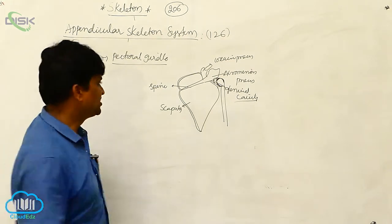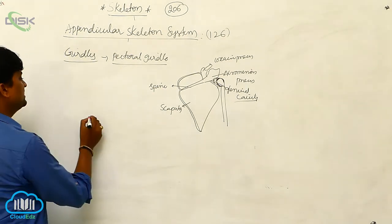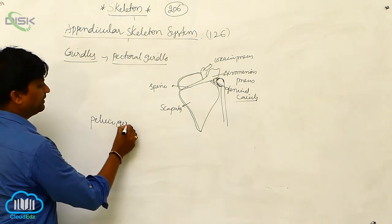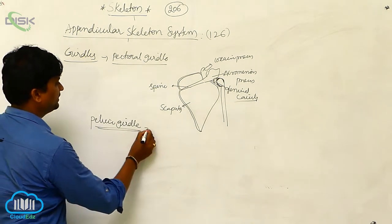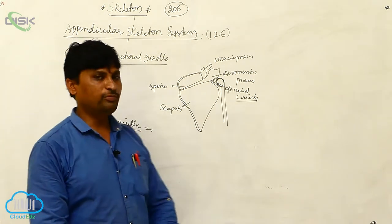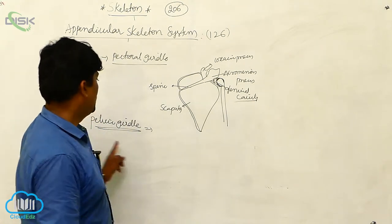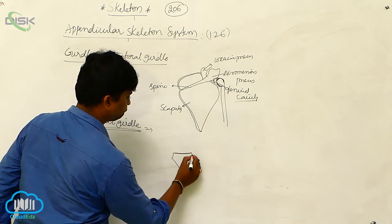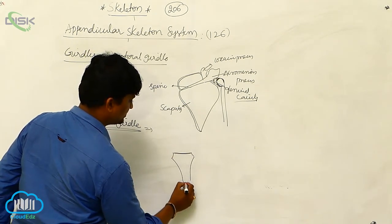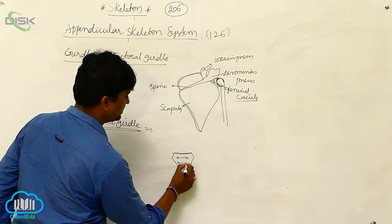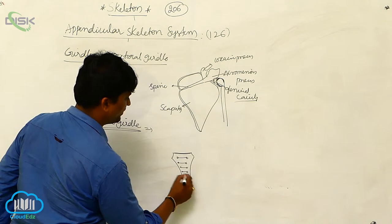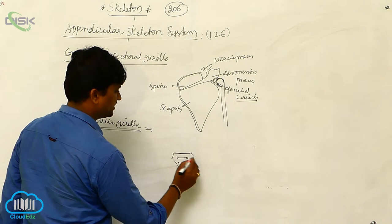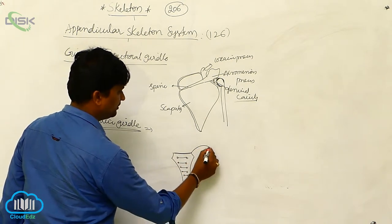The second girdle is the pelvic girdle. The pelvic girdle is formed by two bones. For example, the sacrum — we already know that five fused bones form the sacrum. The last part of the vertebral column is called the coccyx.